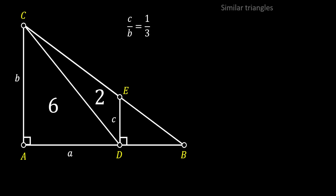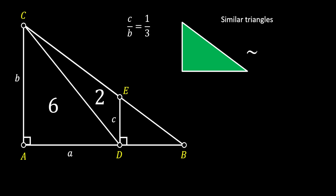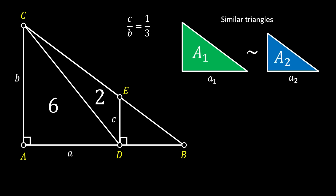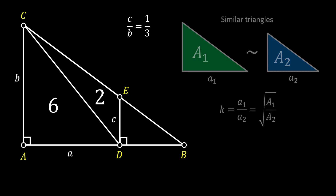Now let's use one really interesting property of similar triangles, which states that if we have two similar triangles and label their sides and their areas, the factor of similarity between those two triangles can be calculated as the relation between their sides, but it can also be calculated as the square root of the relation between their areas. We will use this fact in our favor.